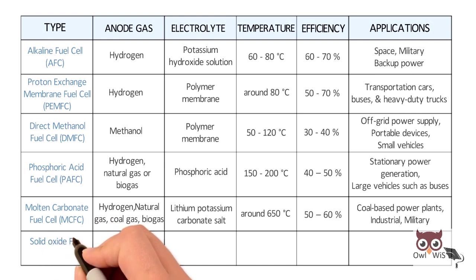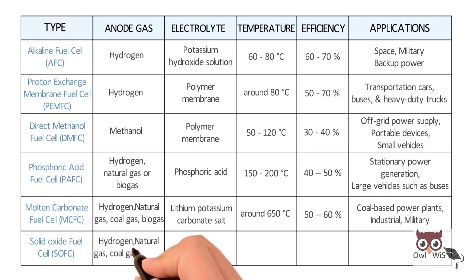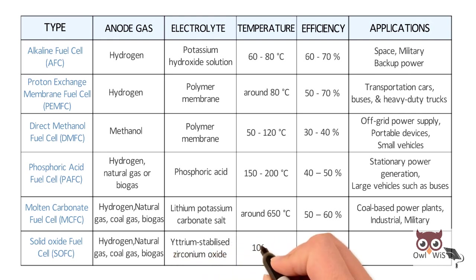Solid oxide fuel cell, SOFC. Hydrogen, natural gas, coal gas, and biogas is used at the anode. Yttrium stabilized zirconium oxide is used as electrolyte. Working temperature is around 1000 degree celsius with 60 to 65 percent efficiency. Used in stationary power stations.